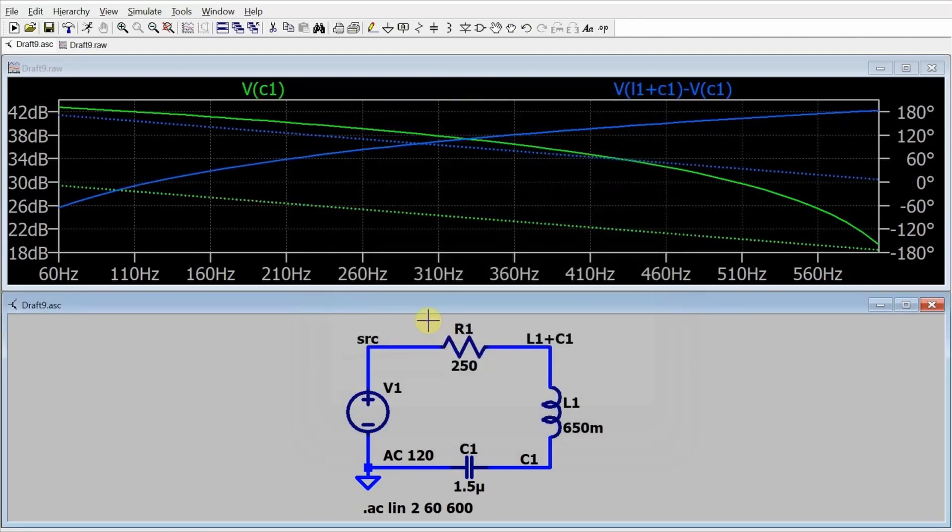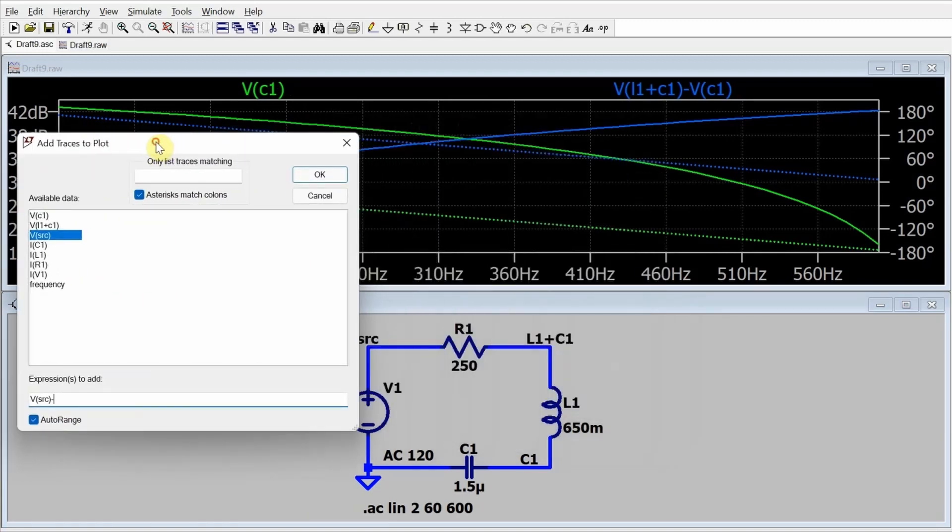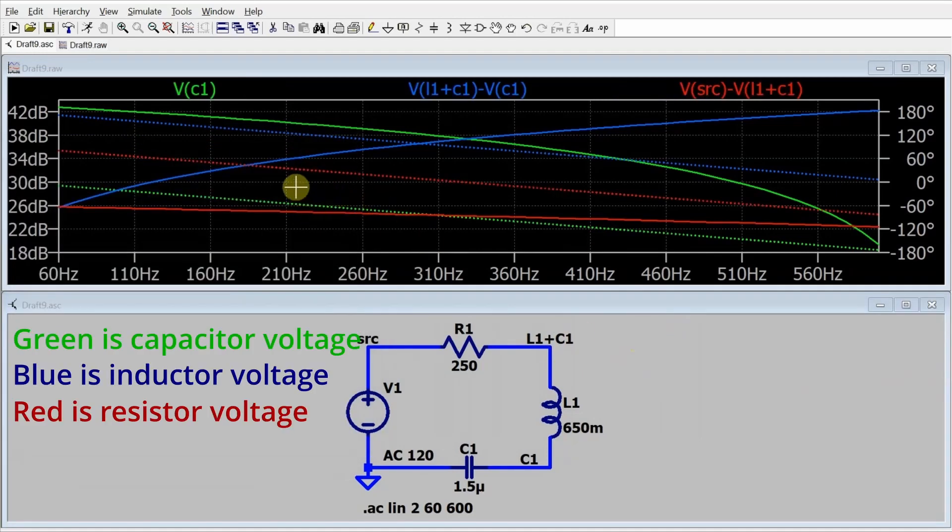And then if I add another trace and I call that the source voltage minus this L1 plus C1 voltage, that's the resistor voltage. So there's the three voltages that I care about. I'll come back and do the currents in just a sec.